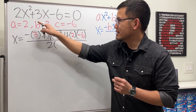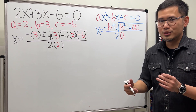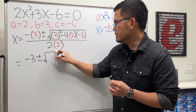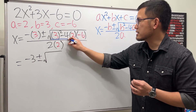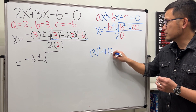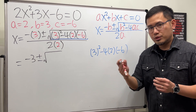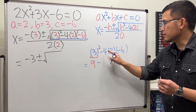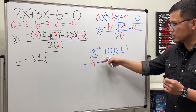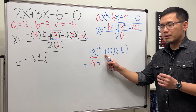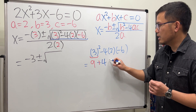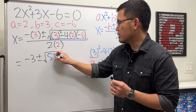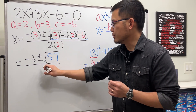Working this out: negative 3, plus or minus, open the square root. Let's focus on the inside. We have 3 squared minus 4 times 2 times negative 6. 3 squared is 9. Now for the sign: negative times positive times negative makes positive. Then 4 times 2 is 8, times 6 is 48. So we have 9 plus 48 which equals 57. That's the number inside the square root, and we divide by 2 times 2 which is 4.